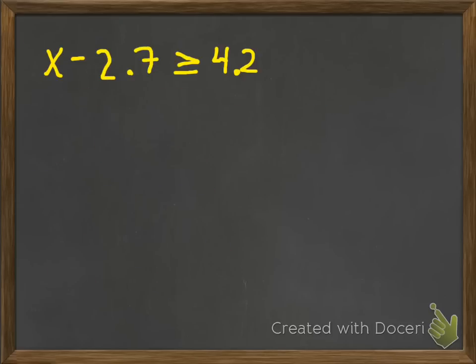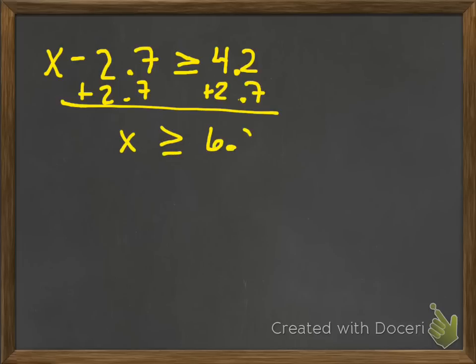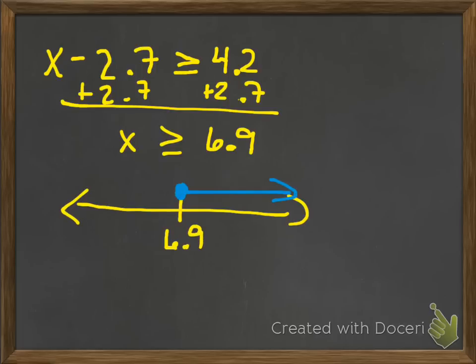Next problem. x minus 2 and 7 tenths is greater than 4 and 2 tenths. What's the opposite of a minus? Add. So I add, and I get 6.9. And again, just put a thing in the middle, closed dot, shade to the right.